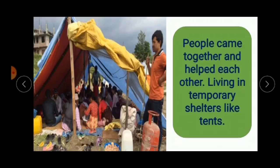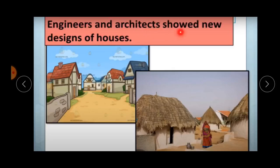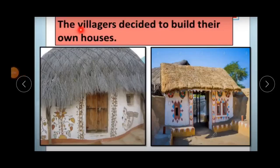Engineers and architects showed the villagers new designs of houses that would not be affected by earthquakes. But the people were a little afraid — they thought that if these people built their houses, their village would not look like their old village. So the villagers decided to build their own houses, just as beautiful and the same as their older houses.